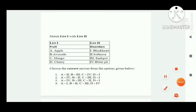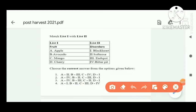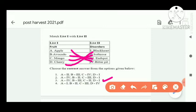Next match the column question on post-harvest disorders: apple — bitter pit; avocado — end spot; mango — soft nose; cherry — black heart. Option C is correct.